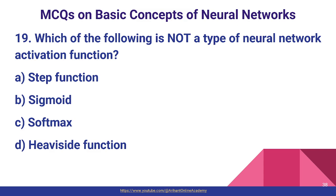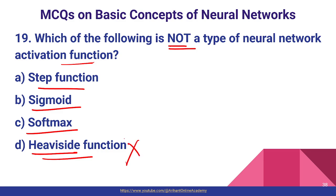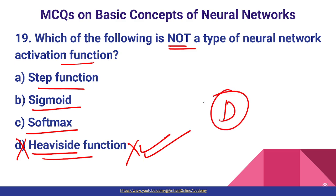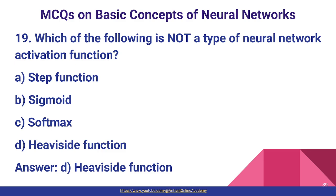Question number nineteen: which of the following is not a type of neural network activation function? Step function, Sigmoid, and Softmax are all activation functions. However, the Heaviside function is not an activation function. So option D is the correct answer — it is not an activation function.